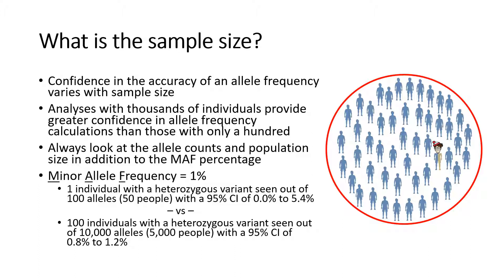As an example, if we know a variant has an allele frequency, or minor allele frequency (MAF), of 1%, that could mean that it has been seen in 1 out of 50 people, or 1 out of 100 alleles, or in 100 out of 5,000 people, or 10,000 alleles. We have much higher confidence in the allele frequency of 1% when it comes from a population of 5,000 people, or 10,000 alleles, as is illustrated by the 95% confidence intervals.